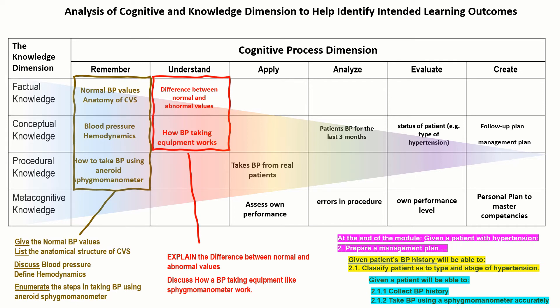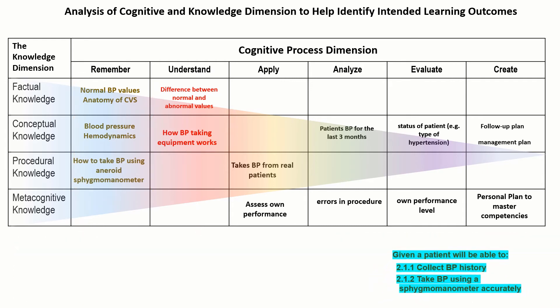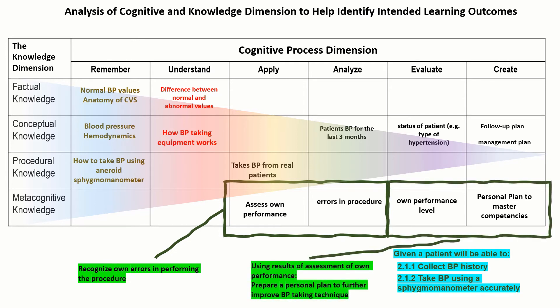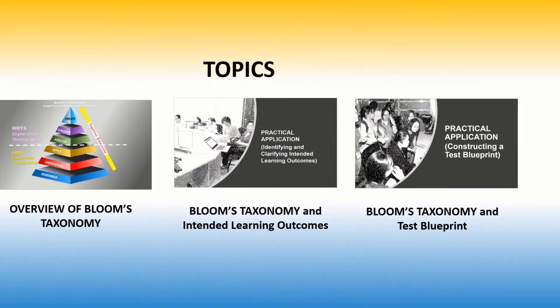Breaking down the competency related to metacognition and Create: before students can create their own personal plan, they need to recognize their own errors in performing the procedure. Based on that evaluation, using the results of their own performance, they prepare a personal plan to further improve their BP techniques. You can see how the Bloom's Taxonomy matrix can be used to clarify intended learning outcomes.